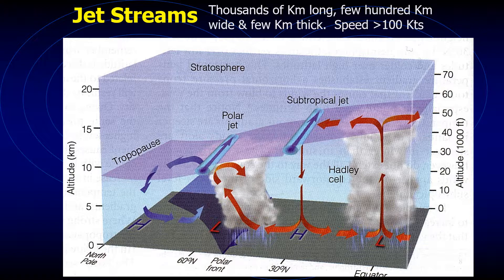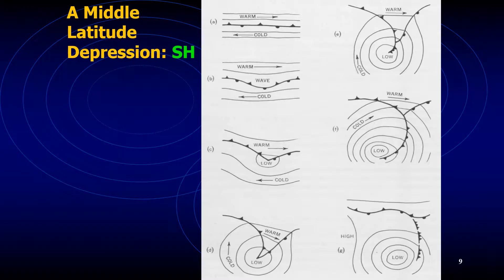A fully fledged mid-latitude cyclone develops with all the necessary ingredients. Eventually, the warm air curls around the north side of the low and the storm system occludes. Some storms may continue to deepen, but most do not as they move out from under the region of upper-level divergence. At the surface, the storm weakens as the supply of warm air is cut off and cold dry air behind the cold front is drawn in toward the surface low.